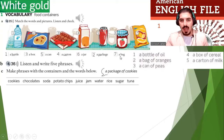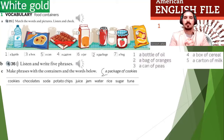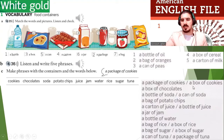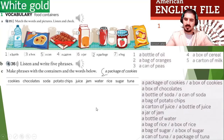You can use: a bag, a package, a jar, a carton, a can, a box, a bottle. Do it with your partner. Some example answers: a package of cookies, a box of cookies, a box of chocolates, a bottle of soda, a can of soda, a bag of potato chips, a carton of juice, a bottle of juice, a jar of jam, a bottle of water, a bag of rice, a box of rice, a bag of sugar, a box of sugar, a can of tuna, a package of tuna.